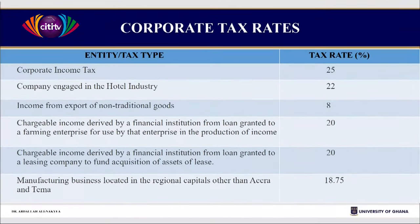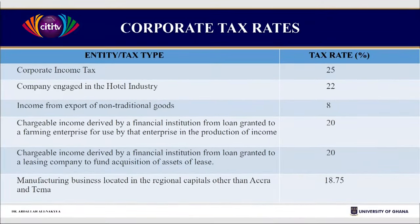Note the rates of taxes applicable to you. The basic corporate tax rate is 25%. But if you are in the hotel or hospitality industry, you have 22%. If you are exporting non-traditional exports, you pay at 8%. If you are a financial institution lending to agriculture or leasing, you pay tax on that income at 20%. And if you are a manufacturing company located outside the regional capitals, instead of 25% you will be paying 18.75%. So your location has a business advantage. If you are not in a regional center — anywhere else in a rural setting — you are at 12.5%, paying half of the existing tax rate.